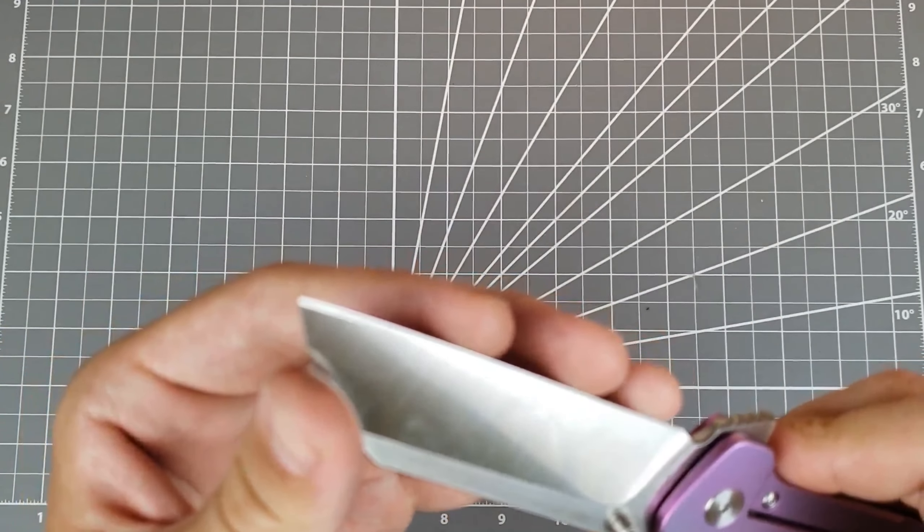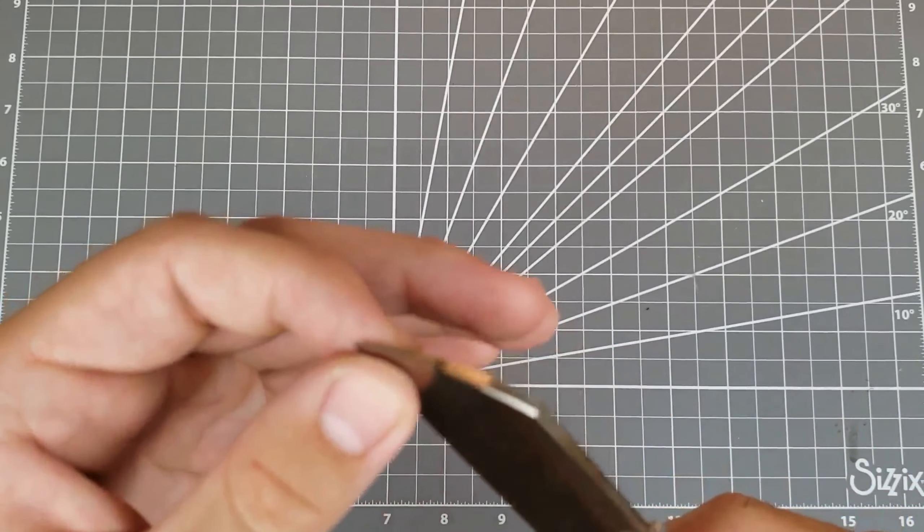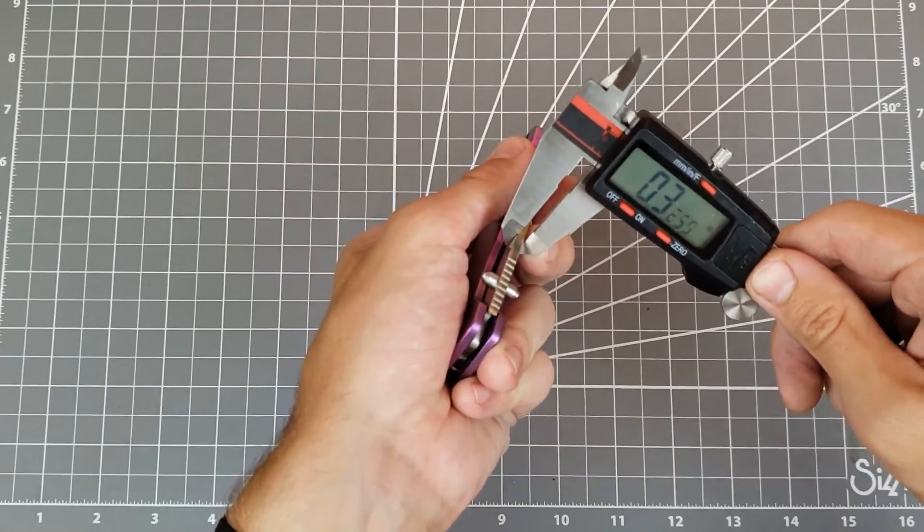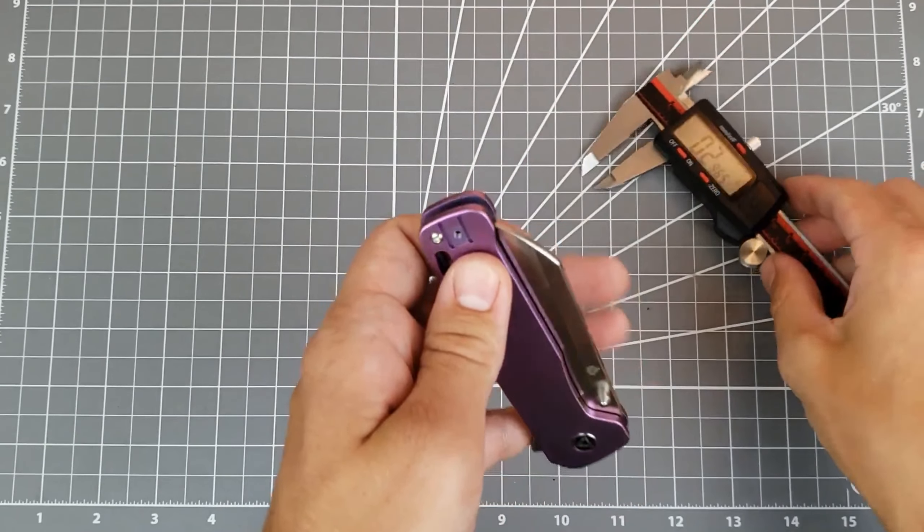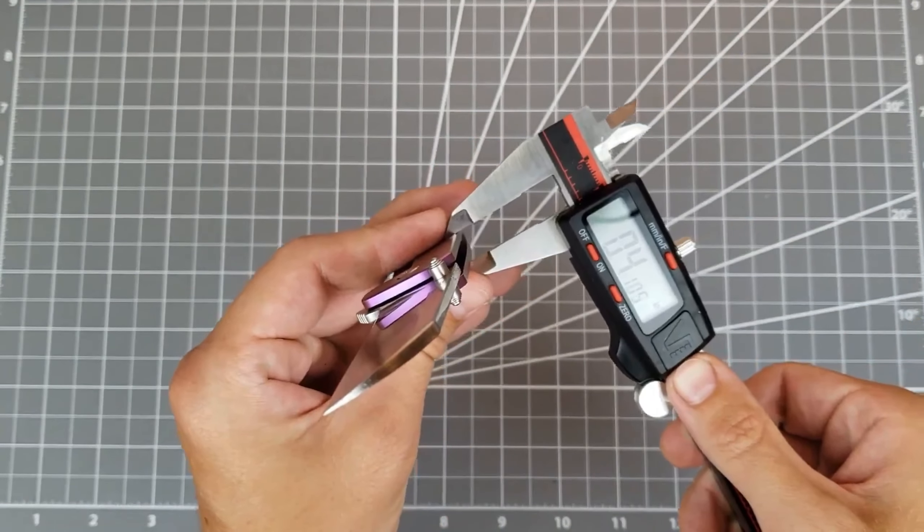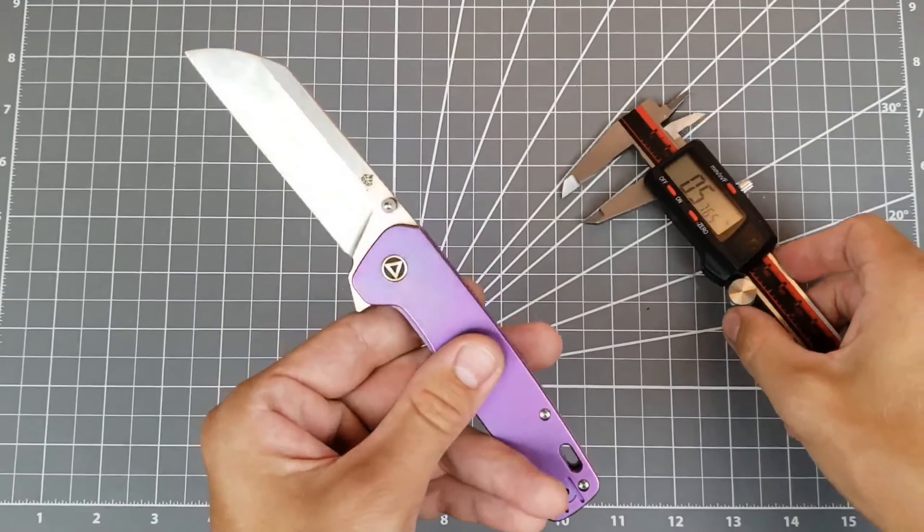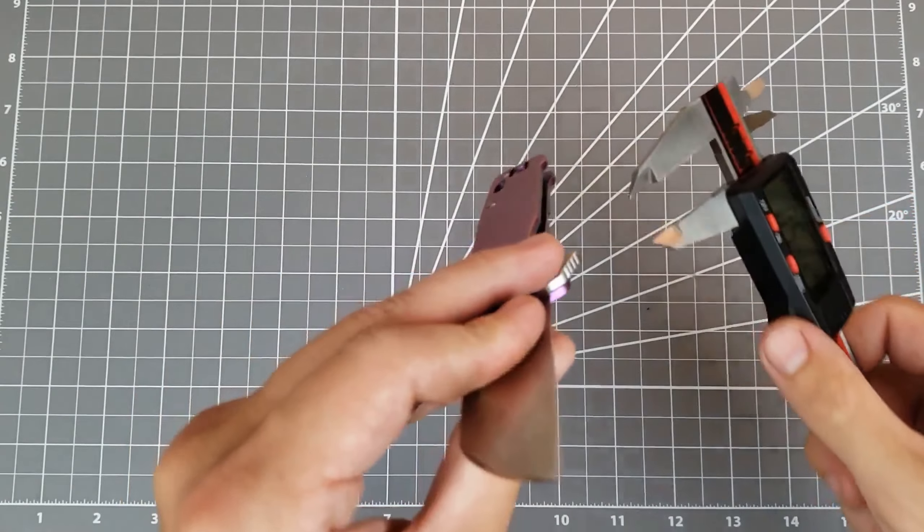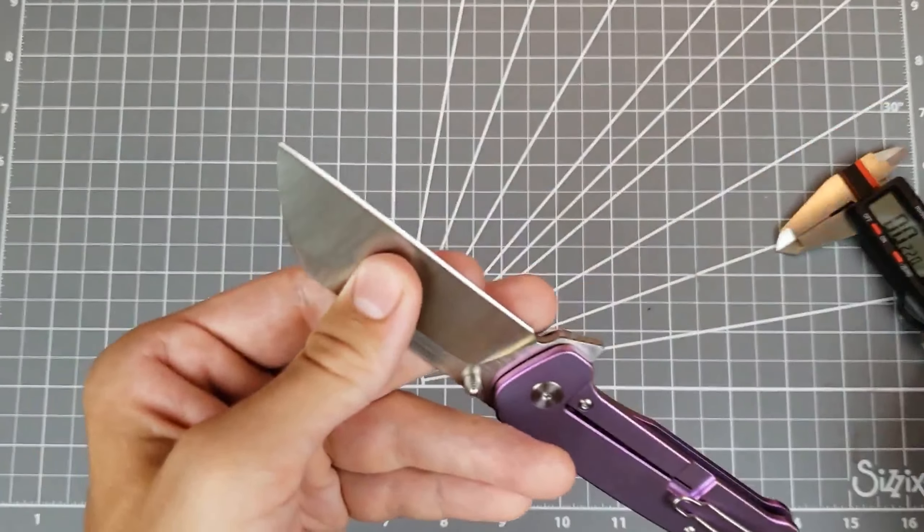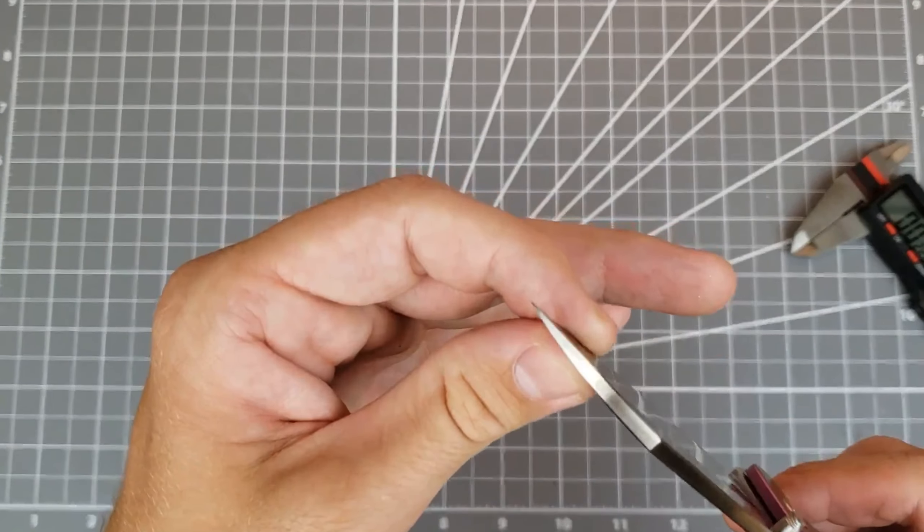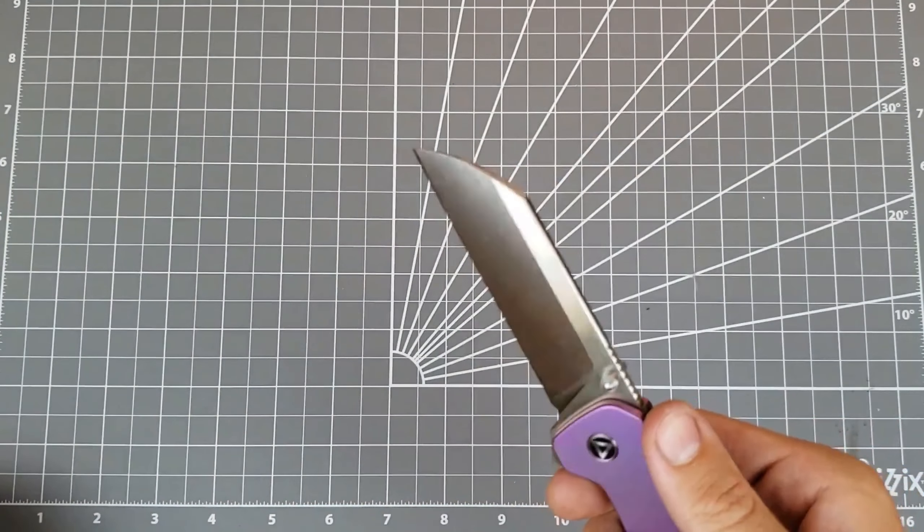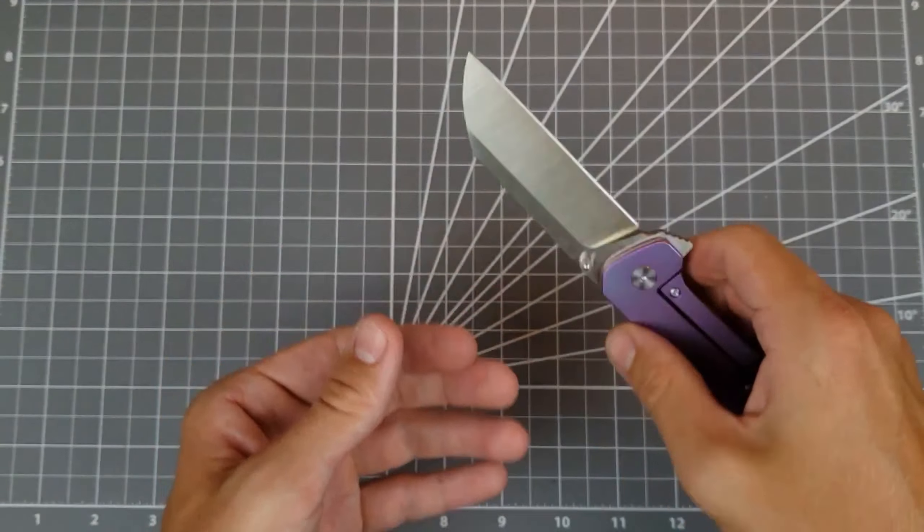This factory edge feels really nice. It's like an excellent factory edge. Feels pretty thinly ground too. Let's take a look at those dimensions. Blade stock is coming in at 0.13, a bit over an eighth of an inch. Handle thickness coming in at 0.41, under half an inch. That's pretty nice thickness. And behind the edge coming in at just over 20 thousandths. That's a little bit thicker than I thought, but that's not so bad for a knife of this size. It's decently thin and the blade stock is decently thin. So I think this is going to cut pretty well overall.